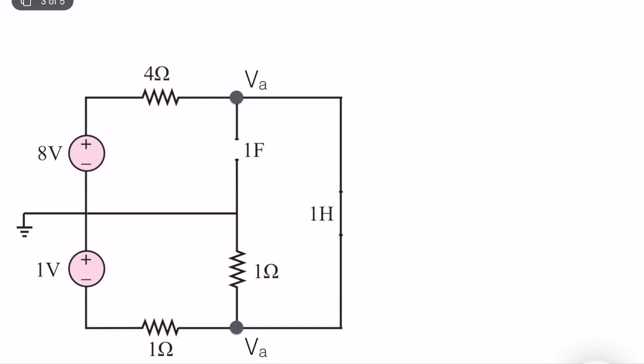We have two voltage sources, as you can see, and ground is already labeled. Technically, we have only a single unknown node in the system, which we call VA. We know this node is equal to zero volts, this one is equal to minus one volt, and this one is equal to eight volts. If we can compute VA, we can easily compute both the capacitor voltage and inductor current.